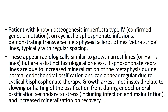These appear radiologically similar to growth arrest lines or Harris lines, but are a distinct histological process. Bisphosphonate zebra lines are due to increased mineralization of the metaphysis during normal endochondrial ossification, and can appear regular due to cyclical bisphosphonate therapy.